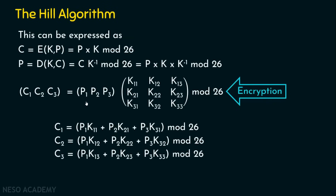To elaborate: C1 = (P1×K11 + P2×K21 + P3×K31) mod 26. C2 = (P1×K12 + P2×K22 + P3×K32) mod 26. C3 = (P1×K13 + P2×K23 + P3×K33) mod 26. This is how the ciphertext is generated.